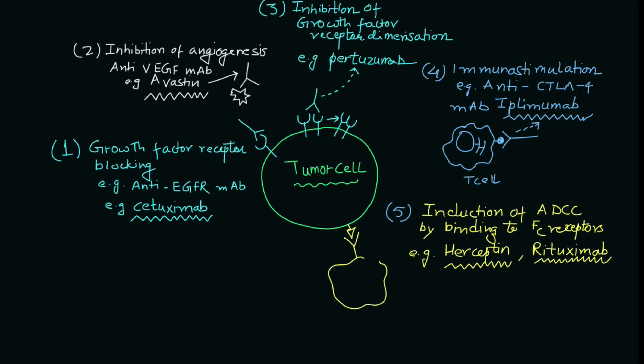As shown diagrammatically, ADCC works by the antibody binding to the tumor cell from the Fab side, and connecting with the effector cell through the Fc fragment, thereby inhibiting that particular tumor cell.